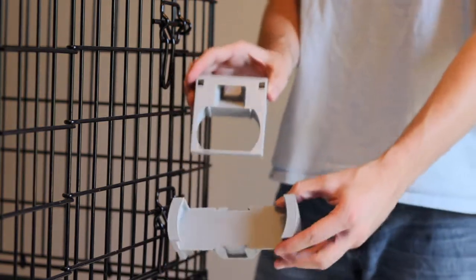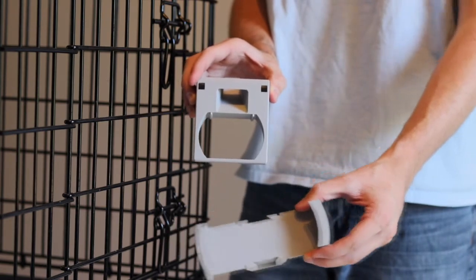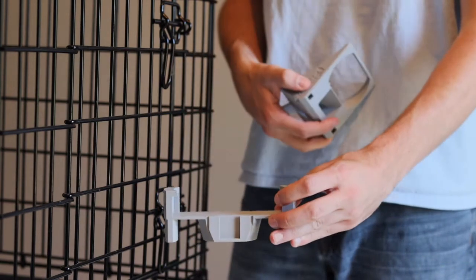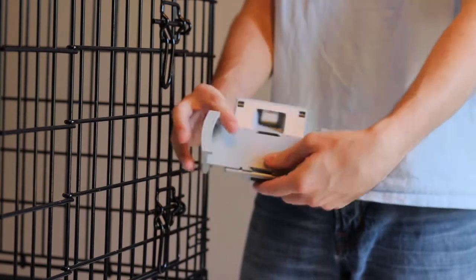The two parts that you see here are the crate mount itself and the universal base. They snap together very simply, either way, either orientation will work.